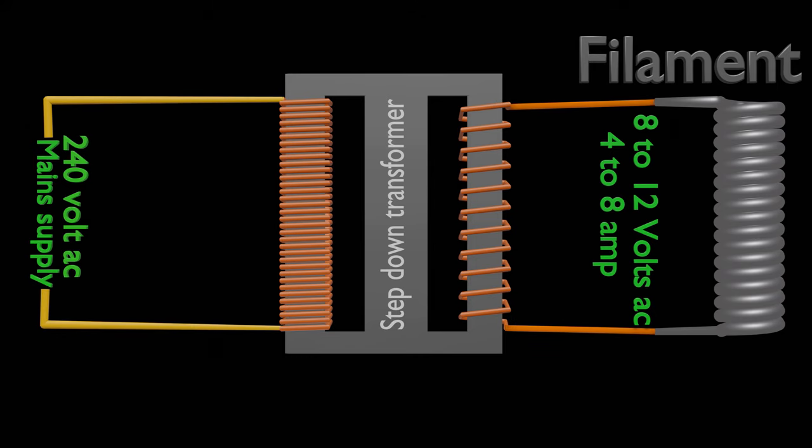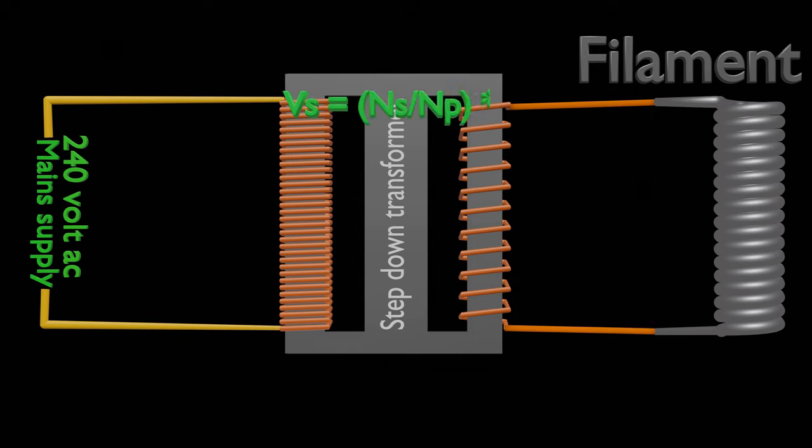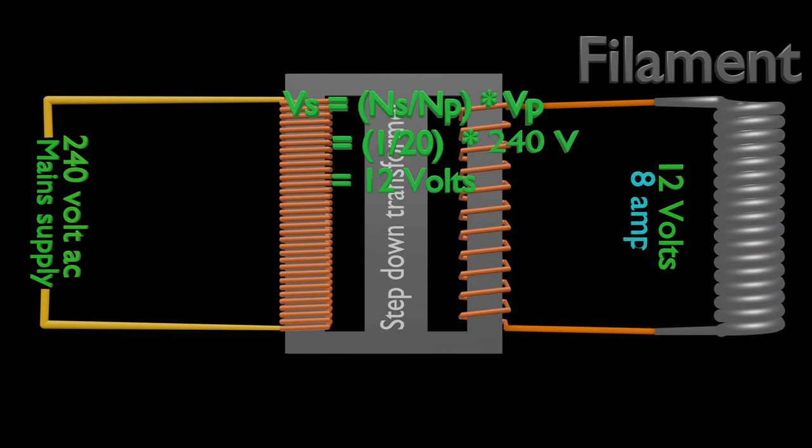As per transformer law, voltage at secondary of a transformer Vs equals number of turns in secondary divided by number of turns in primary, multiplied by voltage across primary. Let there be 20 times more turns in primary than secondary. So our turn ratio becomes 1 divided by 20. And voltage applied to primary of transformer is 240 volts. So we get 12 volts across secondary, or filament. This will result in a current of 8 amperes.